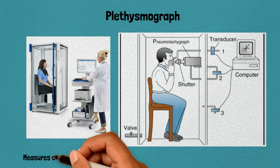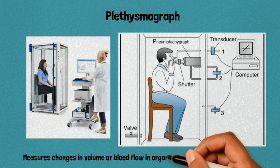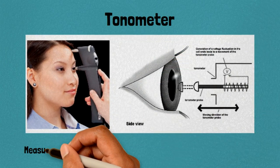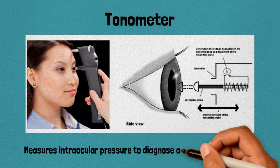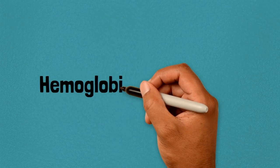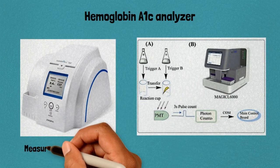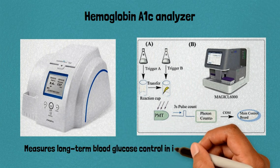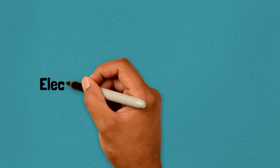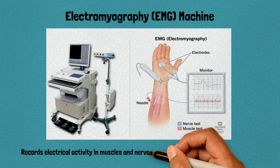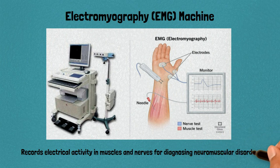44. Plethysmograph: measures changes in volume or blood flow in organs or tissues for diagnostic purposes. 45. Tonometer: measures intraocular pressure to diagnose and monitor glaucoma. 46. Hemoglobin A1c analyzer: measures long-term blood glucose control in individuals with diabetes. 47. Electromyography machine: records electrical activity in muscles and nerves for diagnosing neuromuscular disorders.